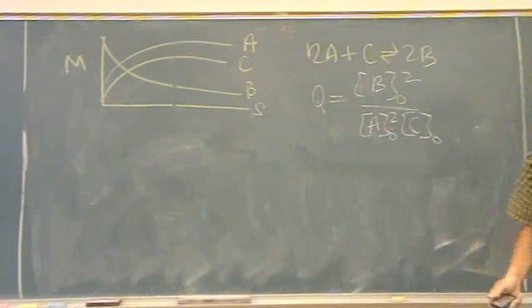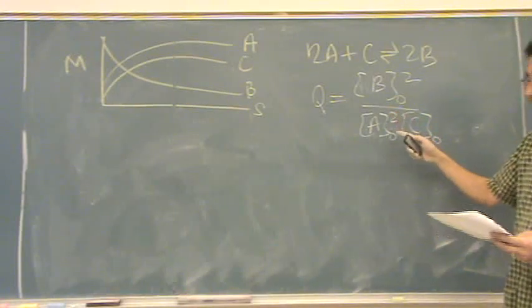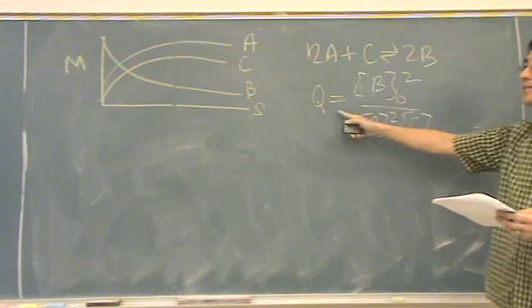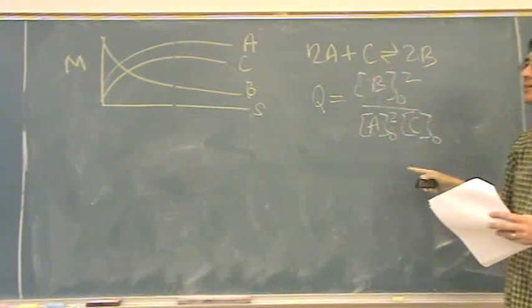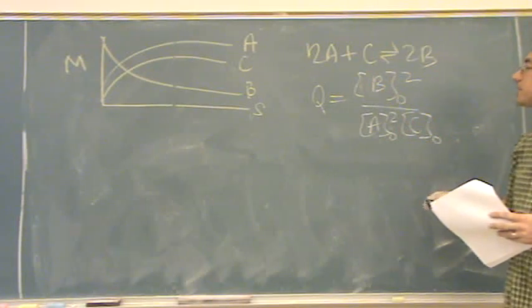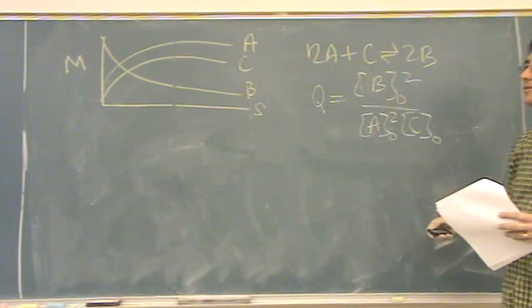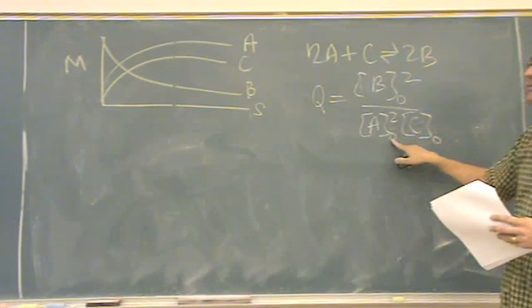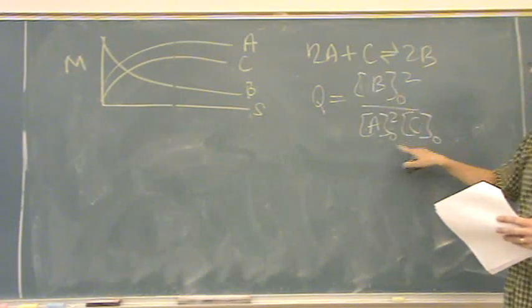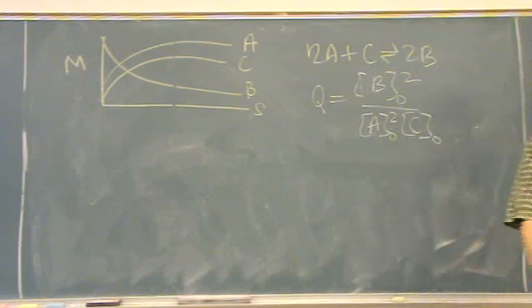Where did you get the equation for part B? That? This crazy equation right here? It's the products over the reactants. Okay, so it's just K. Yeah, well, it's Q. It's Q. K is another one. Q is with initial values here. K is the equilibrium values here. That's the difference. Thank you.